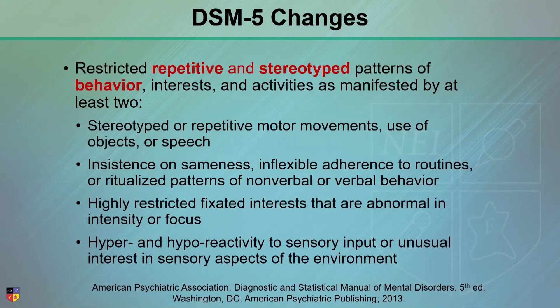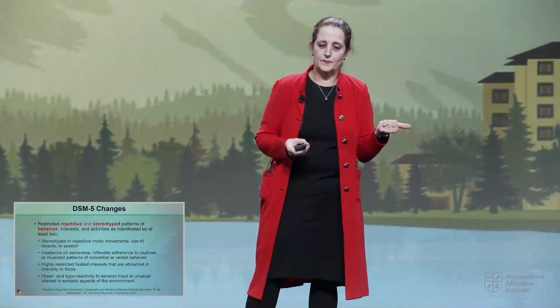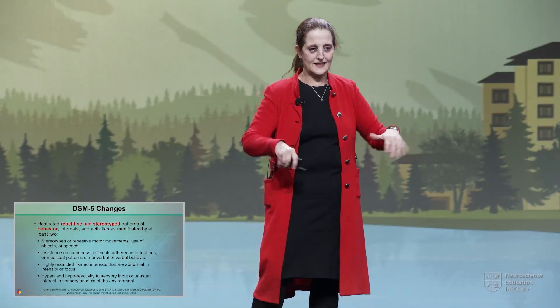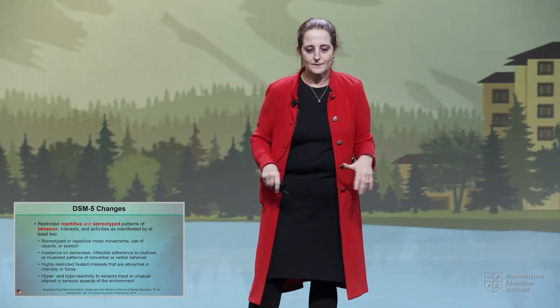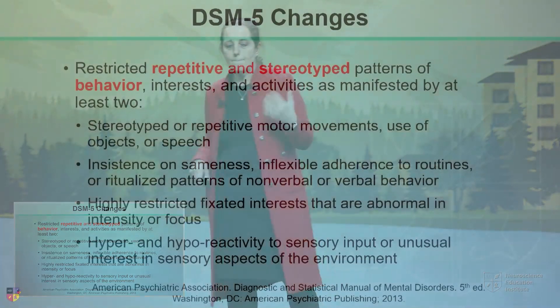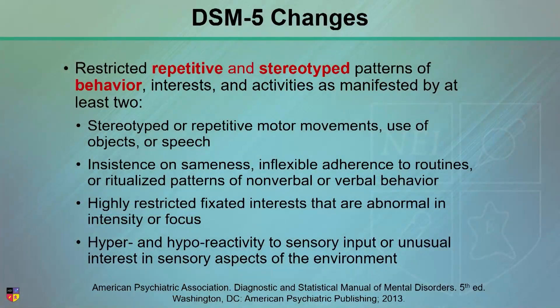We've talked about repetitive and stereotyped behavior — that's the twirling, the flinging. Insistence on sameness. These people make OCD people look relaxed and laid back. They are so rigid and inflexible, and it's oftentimes what brings them to our attention.